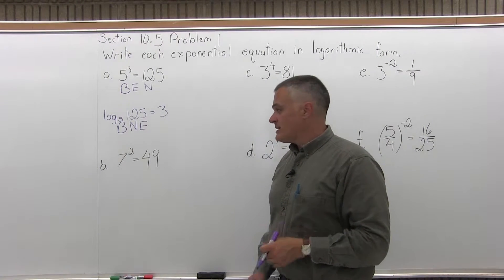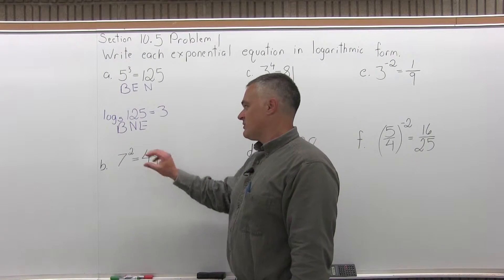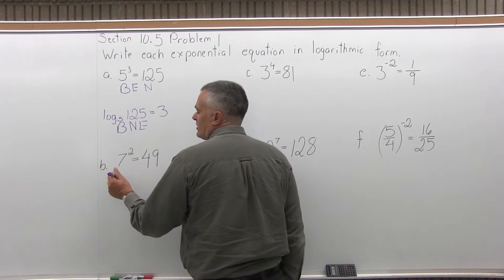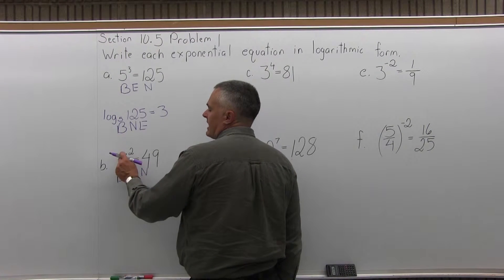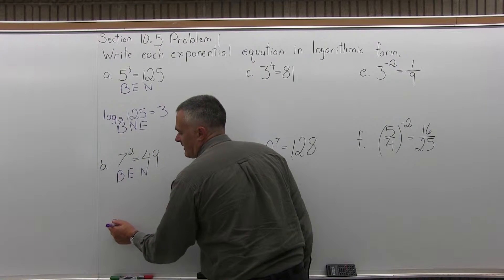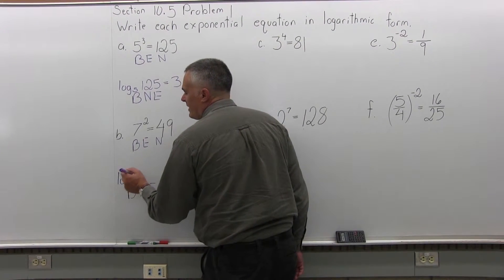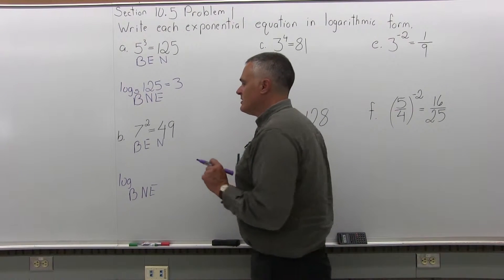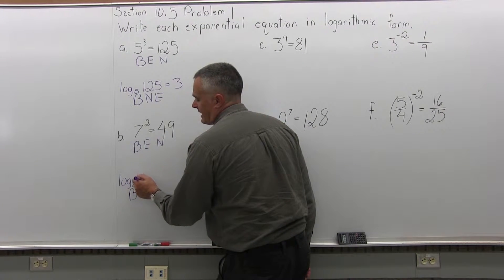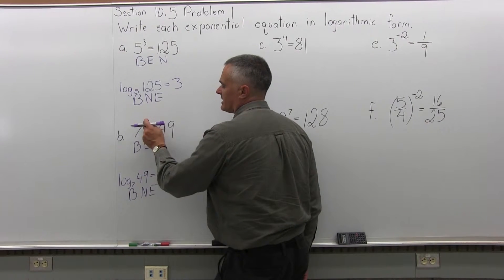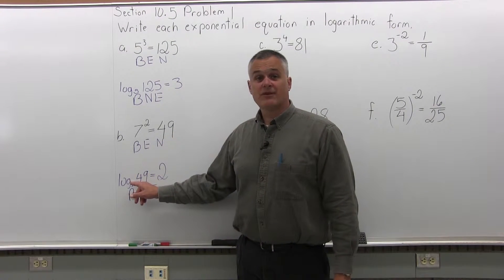Part B is the same process. Take the equation 7 to the second power equals 49 and write it in its log form. Under 7 to the second power equals 49, I write BEN — base is 7, exponent is 2, number is 49. Beneath that I write BNE: log base 7, then the number 49, then equals, then the exponent 2. So 7 to the second power equals 49 is the same as writing log base 7 of 49 equals 2.